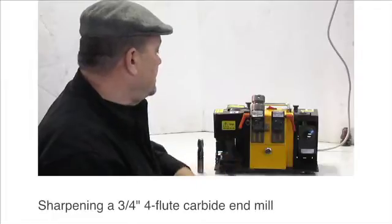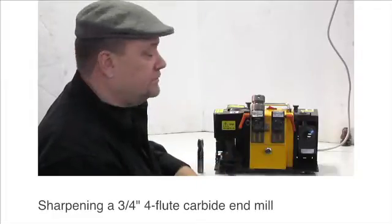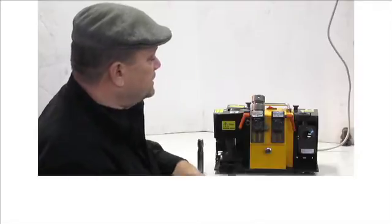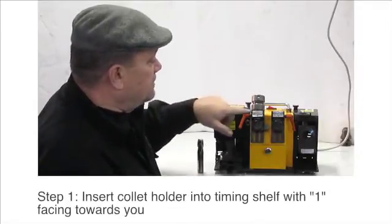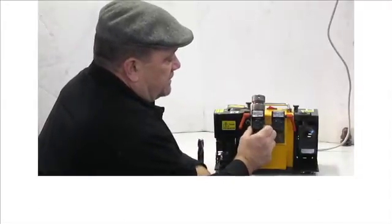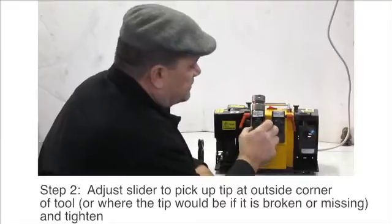So quickly here we'll do a demo to sharpen a four flute carbide end mill. What happens in this process is you put the tool in with number one facing you. This is an adjustable slider depending on the width of your tool. We're going up to three quarters so we'll put it up towards the top and tighten that up so it doesn't move.